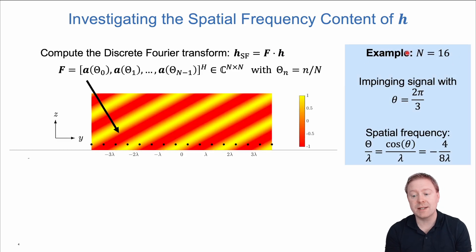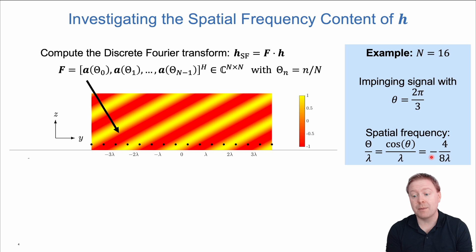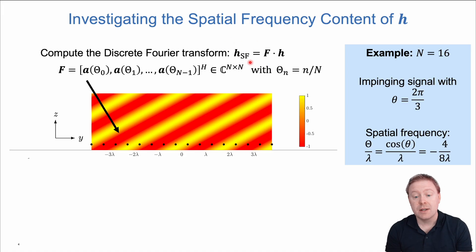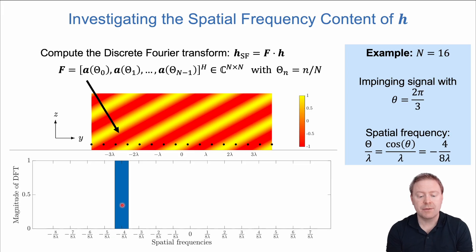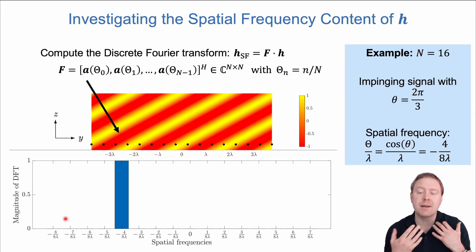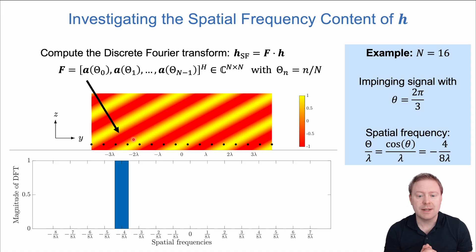Here is an example. We have 16 antennas along the y-axis and a signal impinging from an angle of 2π/3. The spatial frequency of that signal is the cosine of this angle divided by lambda, which equals minus 0.5 times lambda, or minus 4/8 times lambda. When we calculate the discrete Fourier transform, the coefficients H_SF—where SF stands for spatial frequencies—show all the DFT content in the single bin representing our spatial frequency, with nothing at other frequencies. This simply represents a line-of-sight channel using a single spatial frequency in the DFT.